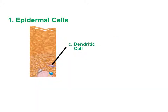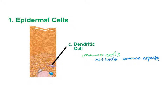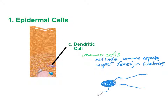The third cell type found in the epidermis are the dendritic cells, which are immune cells. Their function is to activate an immune response — they are essentially sentinels looking for invading pathogens that, when found, recruit the rest of the immune system. They also directly ingest foreign substances, sending out projections between keratinocytes to look for potential invaders.